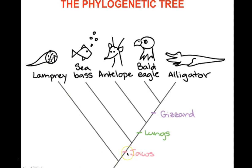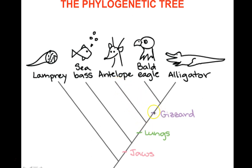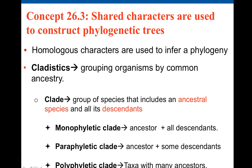The jaw is a derived character because it is present in all members of this lineage but absent in the lamprey. After the jaw, the bus (bass) branches off. Then lungs appear as the next derived character, after which the antelope branches off. Then a gizzard appears — both alligator and bald eagle have a gizzard, making it a derived character for that group. That is how you construct phylogenetic trees.